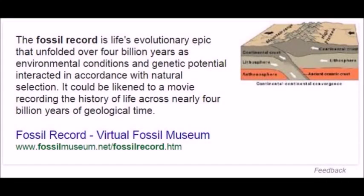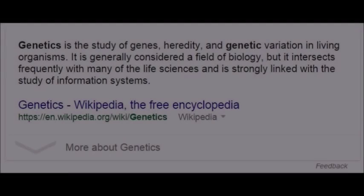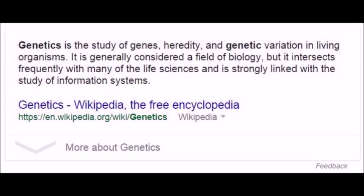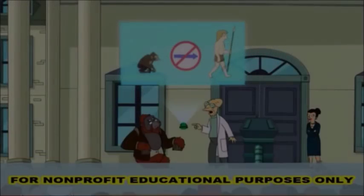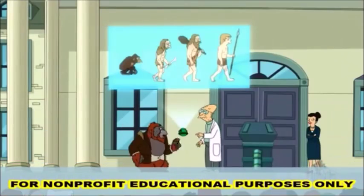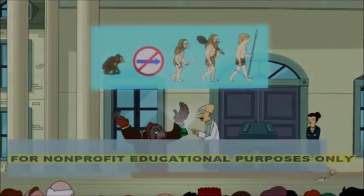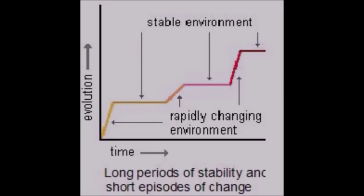It wasn't until both the fossil record and the field of genetics were fully fleshed out with better understanding and technology that the term 'missing links' started losing its value, because it became more and more clear that species weren't evolving in some linear fashion. Instead, species changed in proportion to how drastic their environment changed.